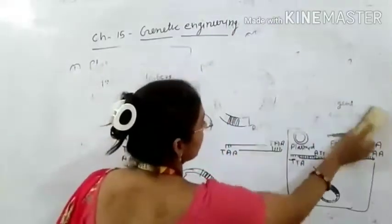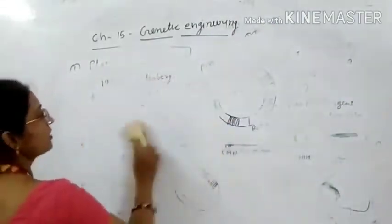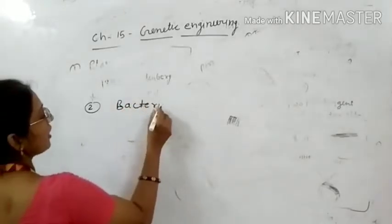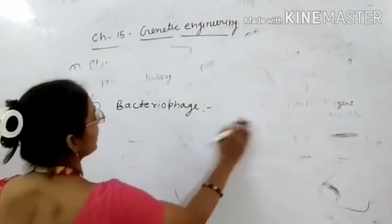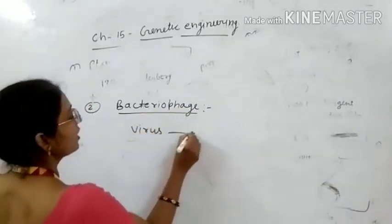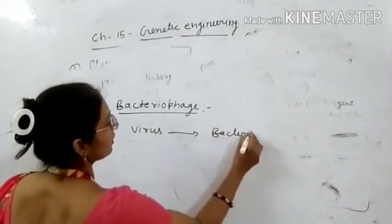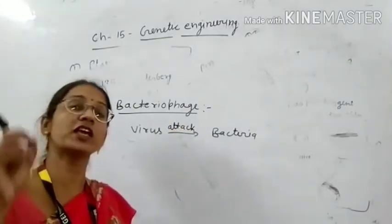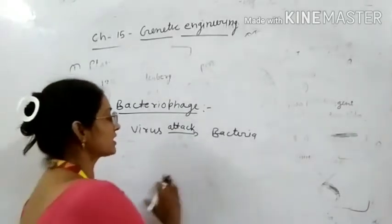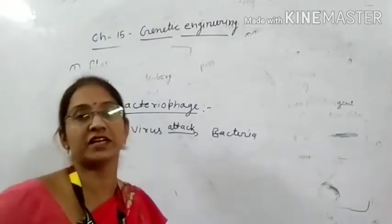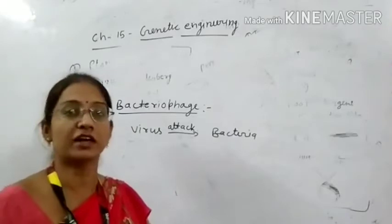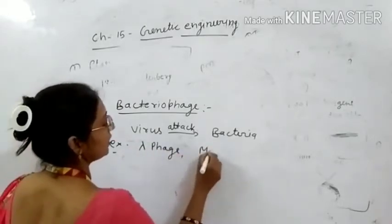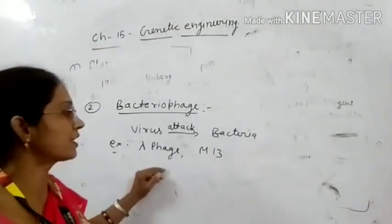Next, we will talk about the second cloning vector — Bacteriophage. Bacteriophage is a virus that attacks bacteria. We can use it as a cloning vector by inserting our desired gene into it. Examples include Lambda phage and M13. These are the bacteriophages which we use as cloning vectors.